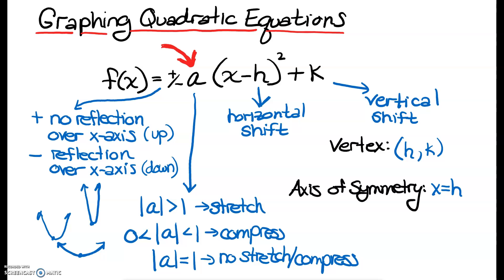As a reminder, our h-value controls our horizontal shift. If h is negative, we move to the left; if h is positive, we move to the right. Our k-value controls our vertical movement, whether we're moving our graph up or down. Our vertex is at (h, k). Our axis of symmetry is the line in which our graph can be mirrored — we can always split a parabola in half, and the equation of this line is x equals h.